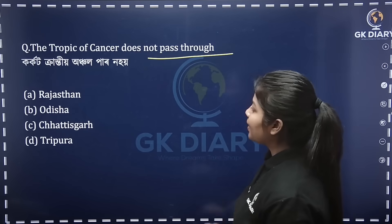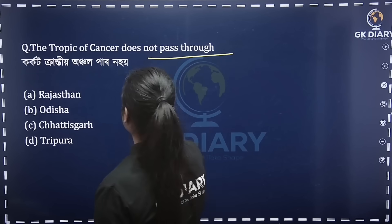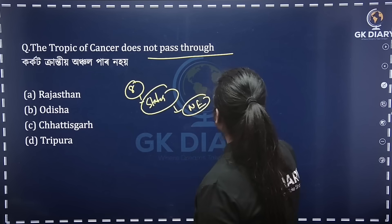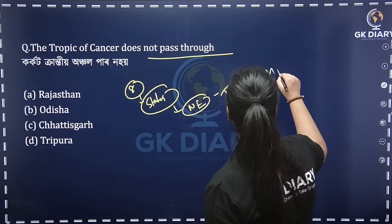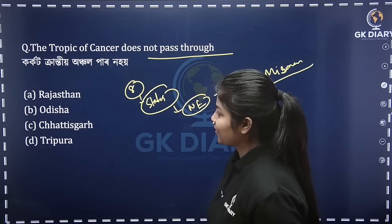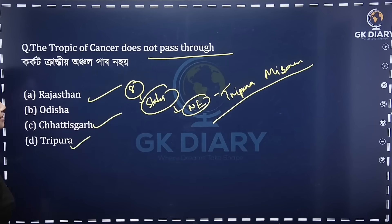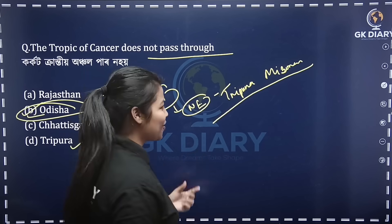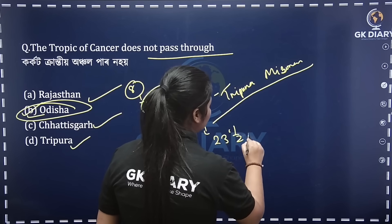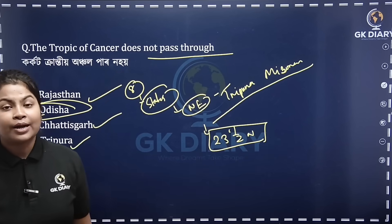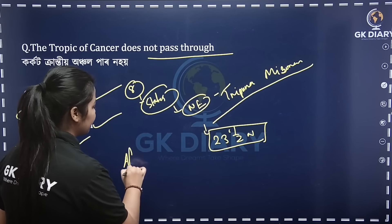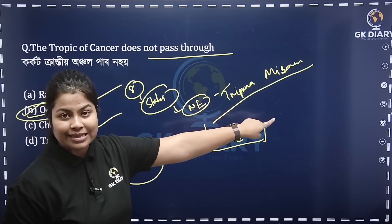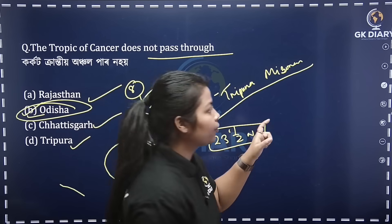This is the Tropic of Cancer — it does not pass through certain states. The Tropic of Cancer passes through the same state and the North Eastern states such as Tripura and Mizoram. The majority of people sit in Mizoram. The Tropic of Cancer is at 23.5 degrees north. In India, there is a Tropic of Cancer, and in every place there is an equator.